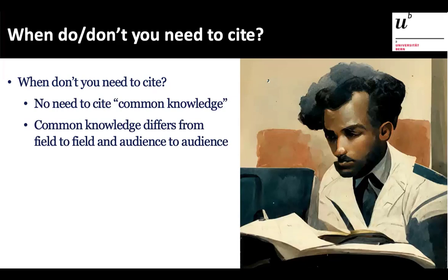How do you know whether something is common knowledge? You really have to look at your field and your audience. Common knowledge differs from field to field. If you're writing an interdisciplinary article but publishing in one discipline's journal, and something might be common knowledge in the other discipline, you need to cite if it's not common knowledge for both disciplines. The key question is: what can I expect my entire audience to already know? You don't have to cite anything your entire audience already knows.